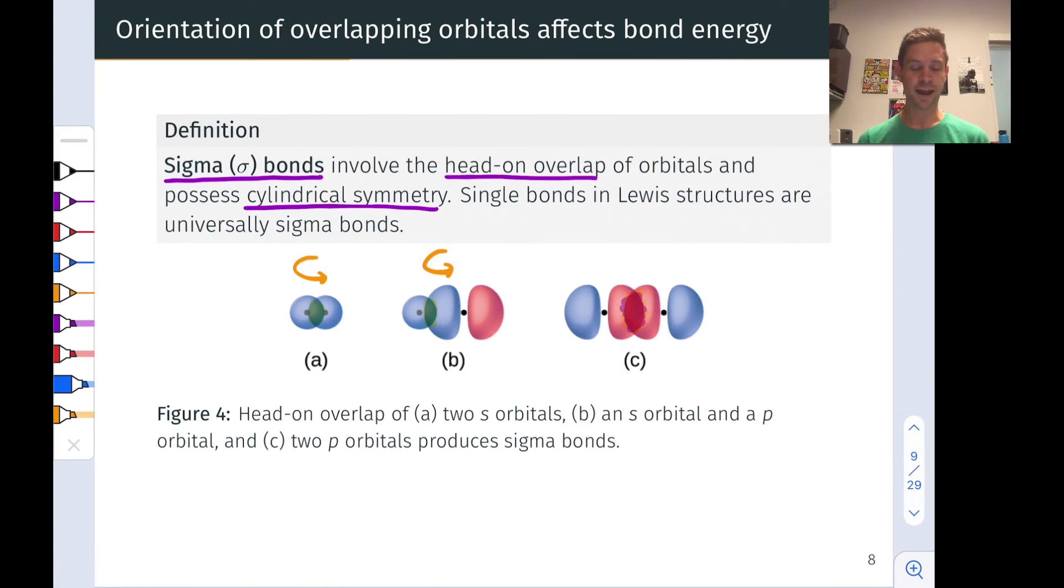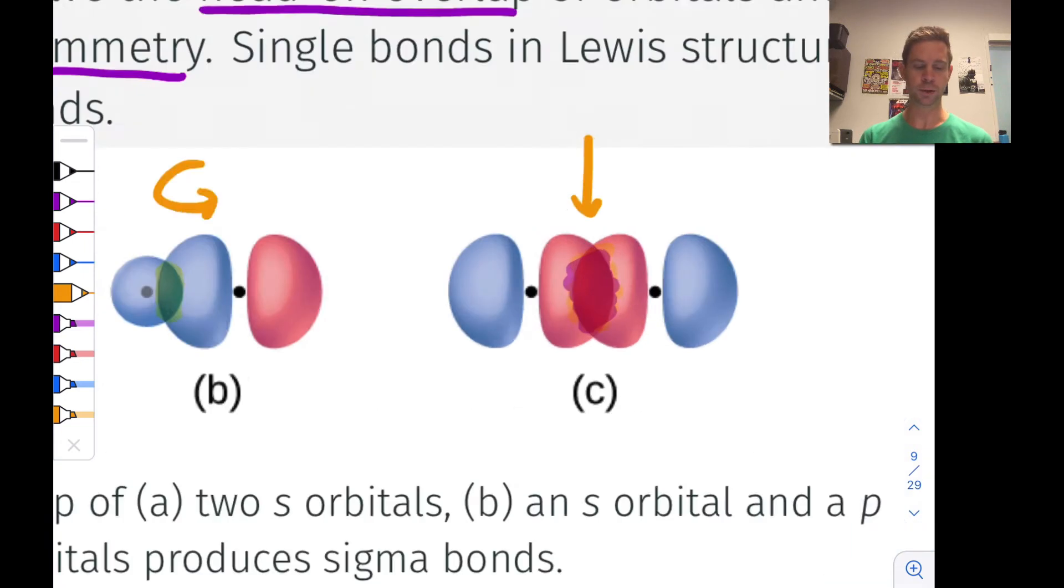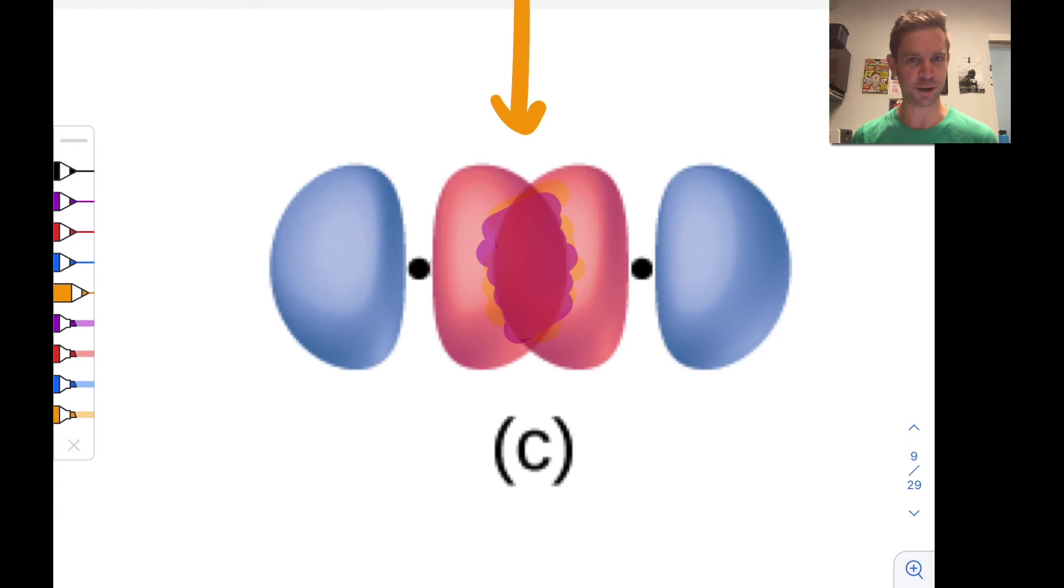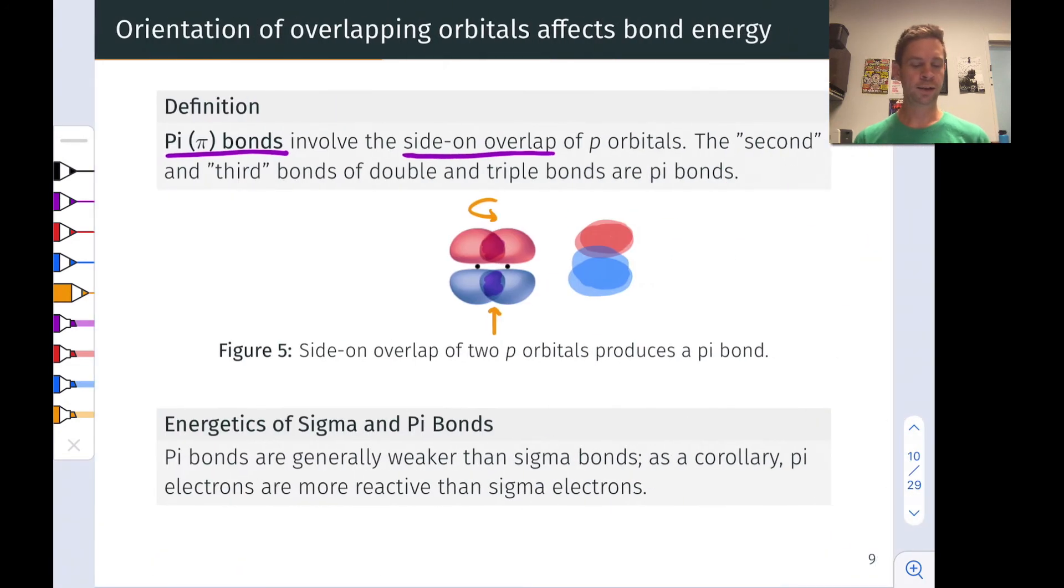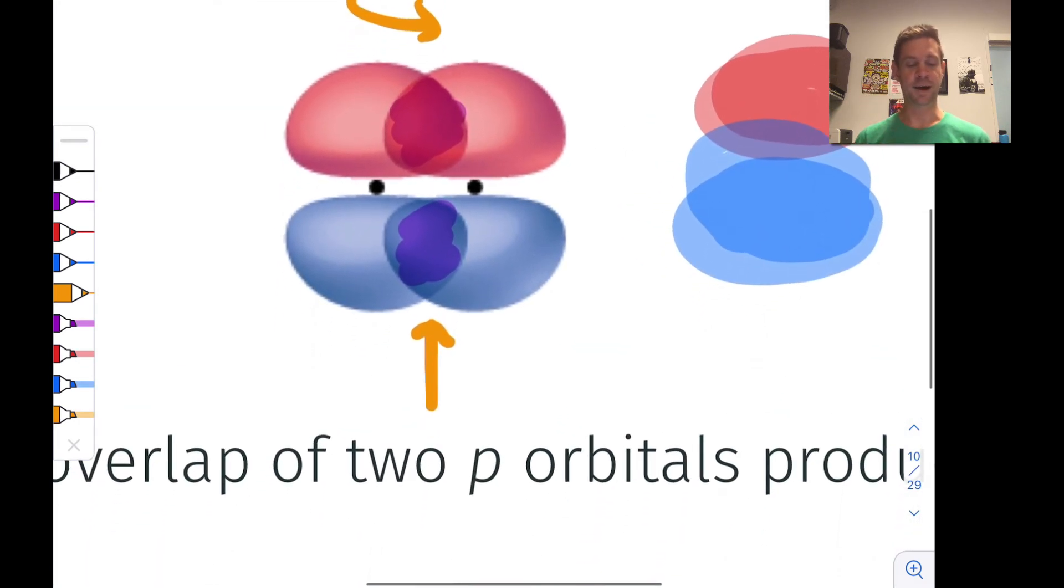Sigma bonding involves a head-on overlap, and I draw your attention here really to see where we can highlight the difference between sigma and pi bonding in very stark terms with two P orbitals. This is absolutely sigma bonding with the P orbital lobes pointed directly at each other. When those lobes are aligned sort of side by side like this, this is a pi bonding situation.